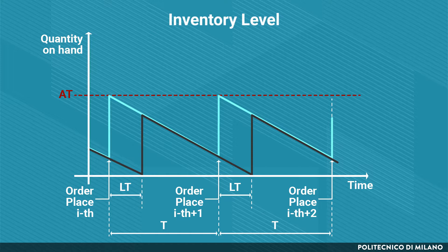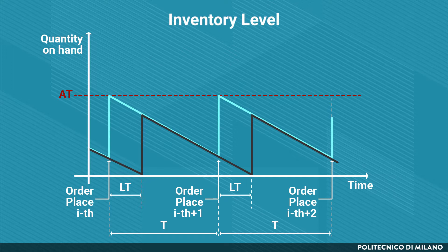If we do not consider demand and lead time uncertainty, the minimum inventory level is equal to zero, while the maximum inventory level is equal to the average order quantity — that is, the average quantity needed to face the demand in a period equal to t.